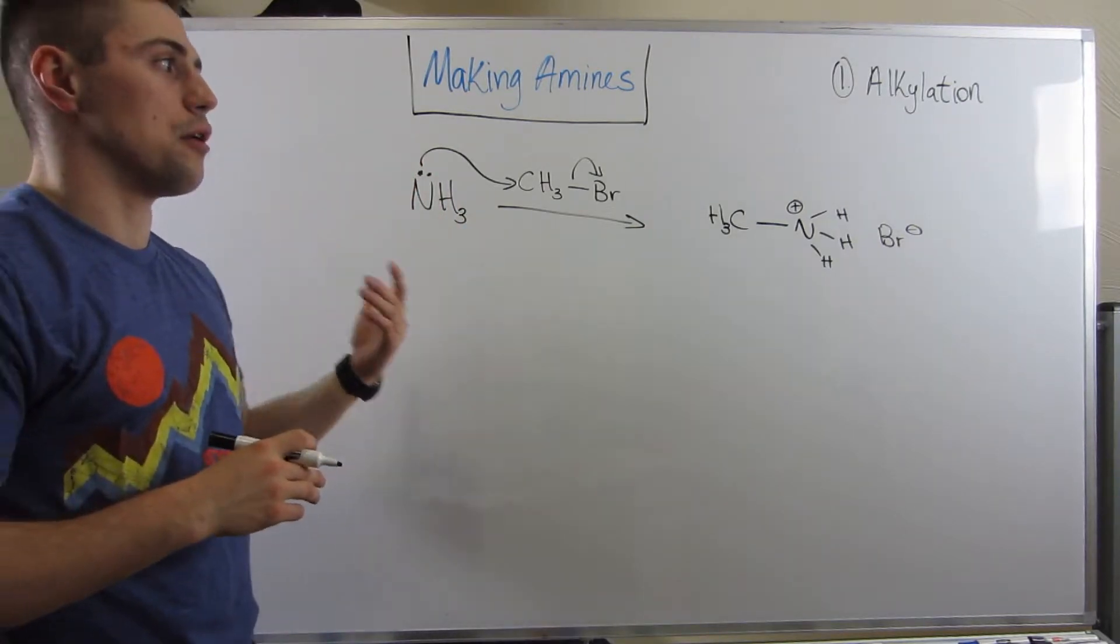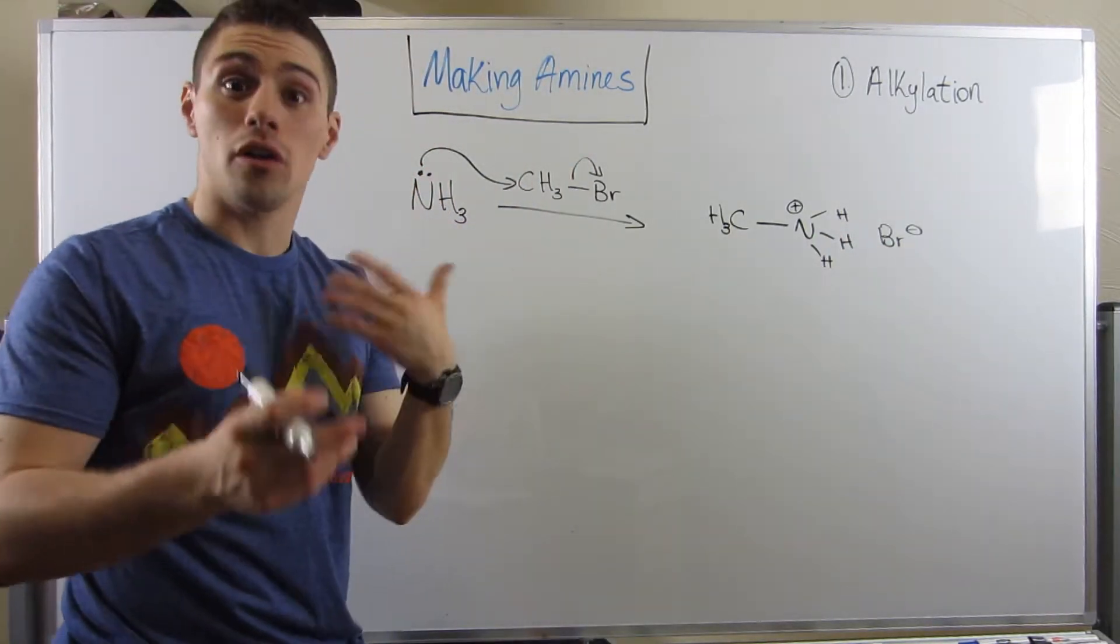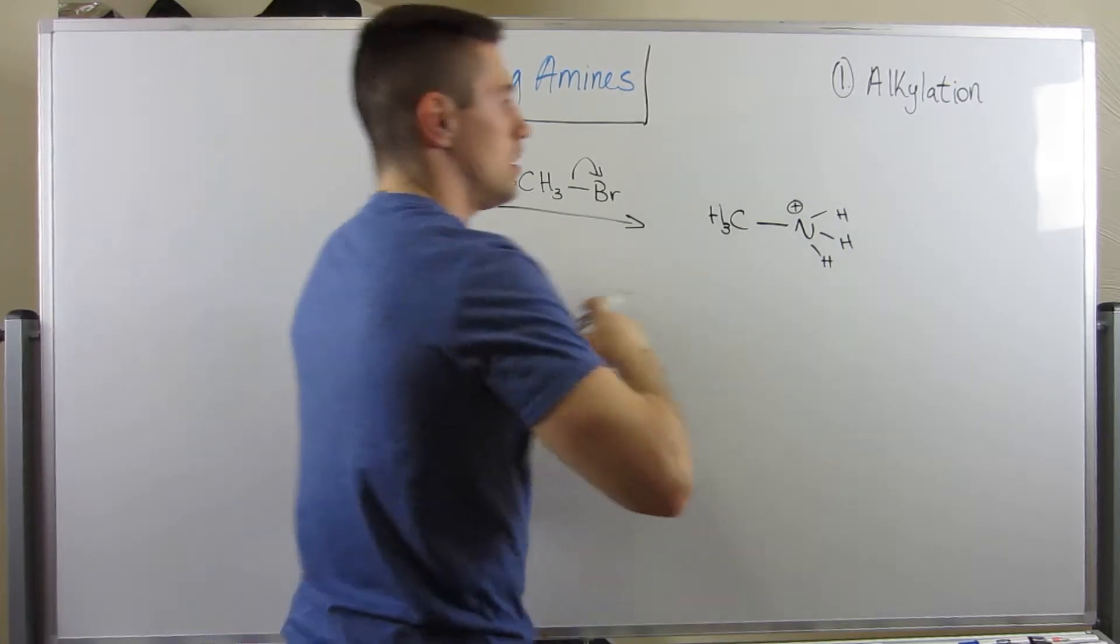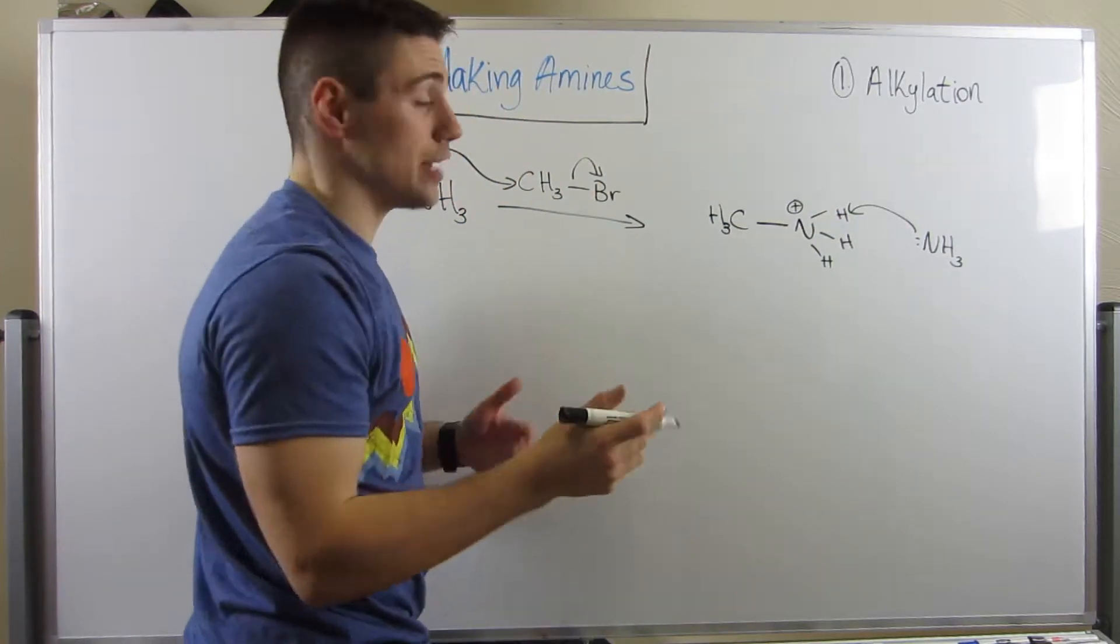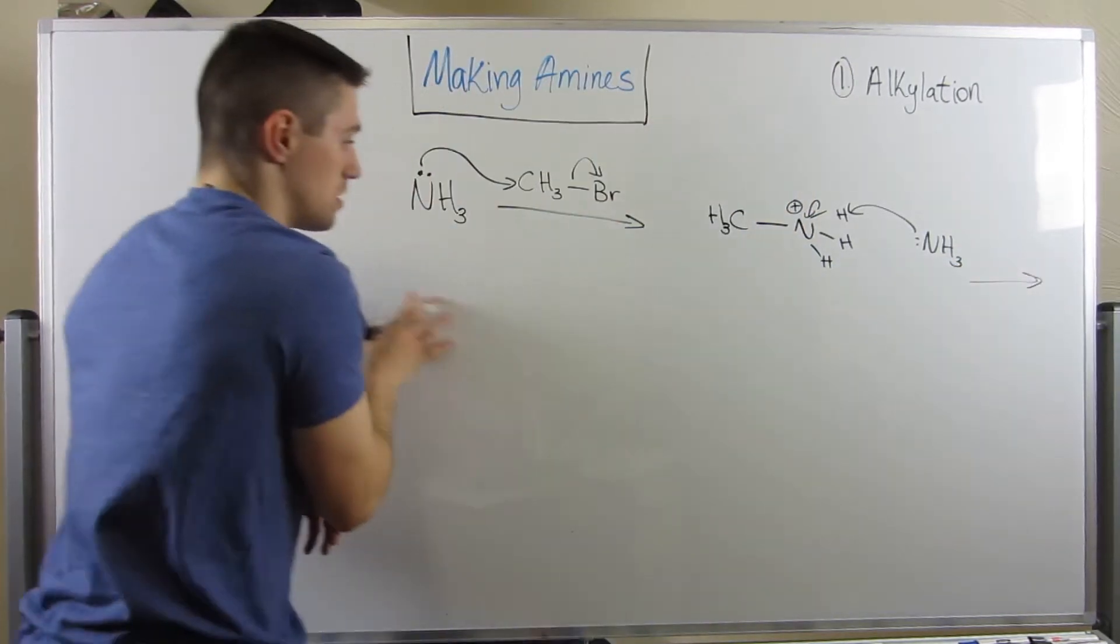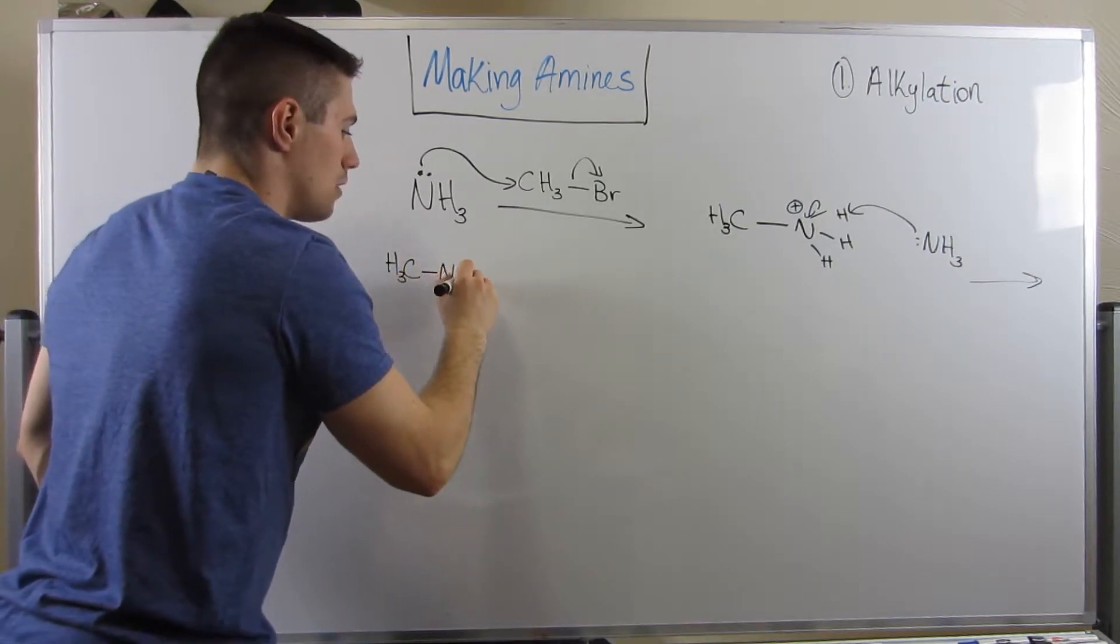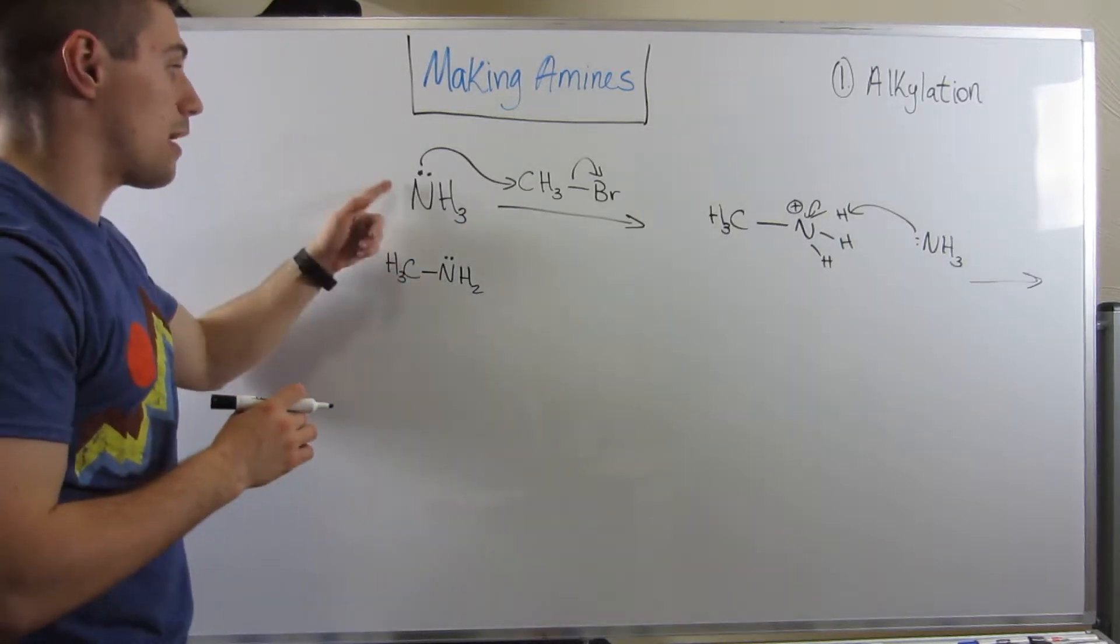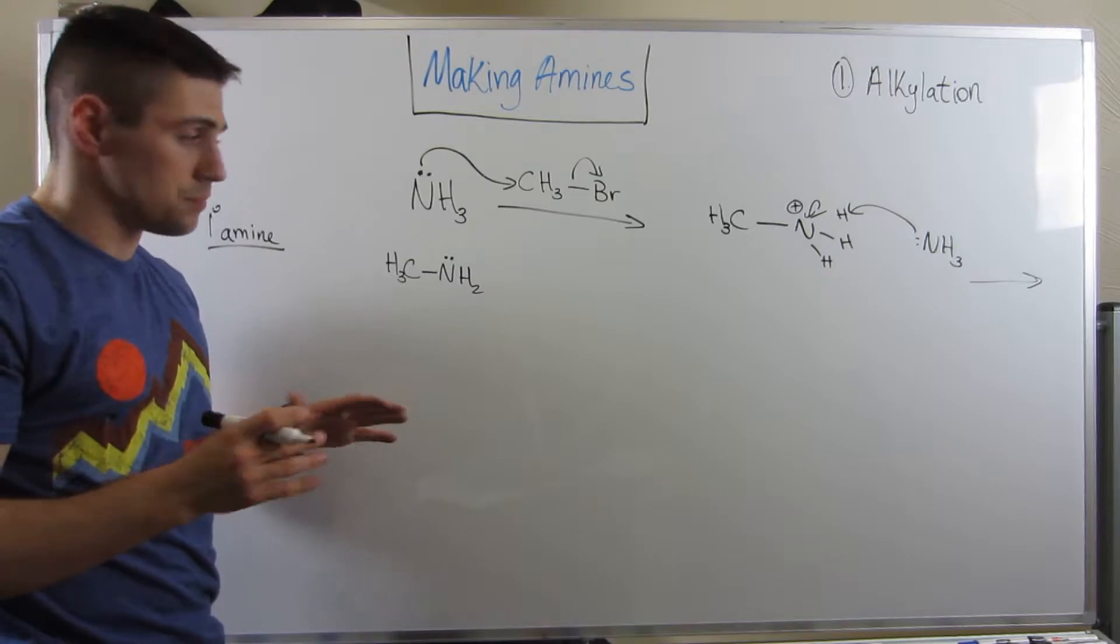We have CH3 now bonded to nitrogen with three hydrogens. Nitrogen now has a positive charge. Bromine would have a minus charge. That would be the first attack. Now, you can assume maybe this Br minus picks up one of these hydrogens. Maybe another NH3 comes over and picks up a hydrogen. For all intents and purposes, somebody is going to come over, grab this hydrogen, and eliminate the positive charge on this nitrogen.